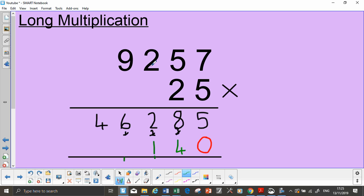And 2 times by 2, which is 4, and 1, which is 5. So now I've got 2 times by 9, which is 18, so my 8 goes there, and my 1 will make another column.